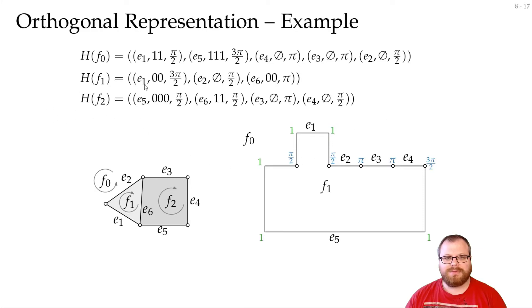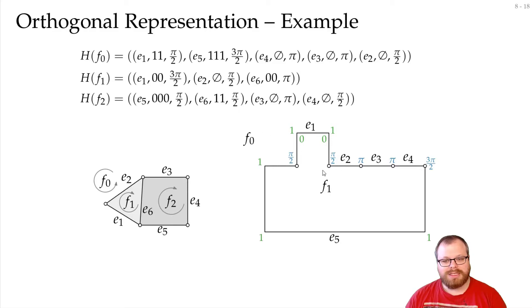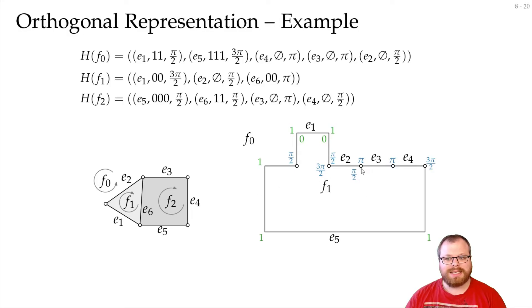Moving on to face F1, we again start with edge E1. It is already correct: we go up, then have two right bends (two zeros). We continue to E2 with a 3pi/2 angle — the representation confirms this. E2 is drawn without any bend. Then a pi/2 angle takes us downward to edge E6, which has two right bends, and that closes the face.